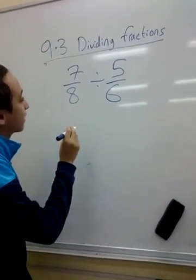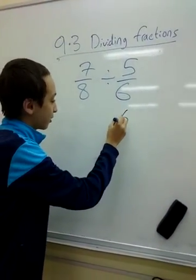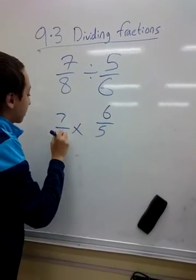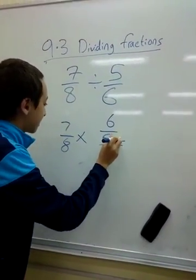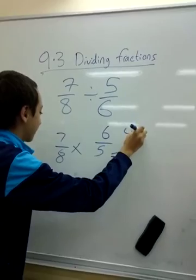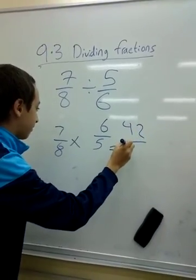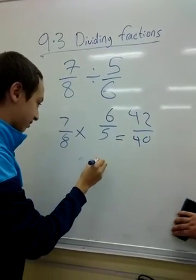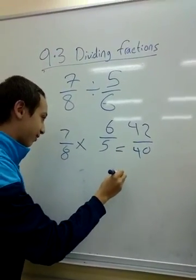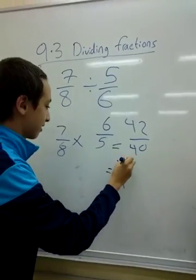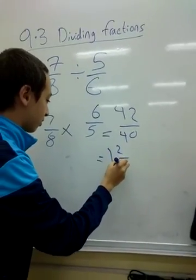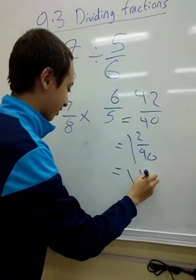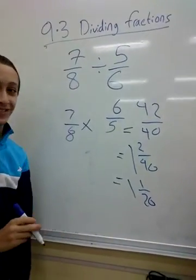I'll use the reciprocal of 5 over 6, which is 6 over 5. And again, I'm going to divide by 7 over 8, which is... 42 over 40. Which is simplify? 3 over 40. Which is 1 and 3 over 40. Excellent! Thank you very much, Annas.